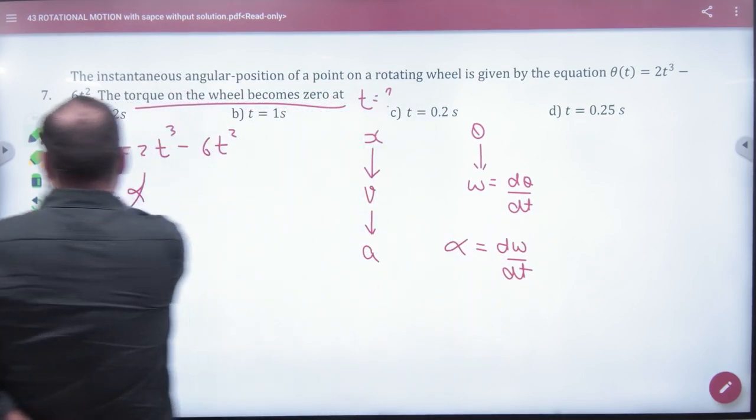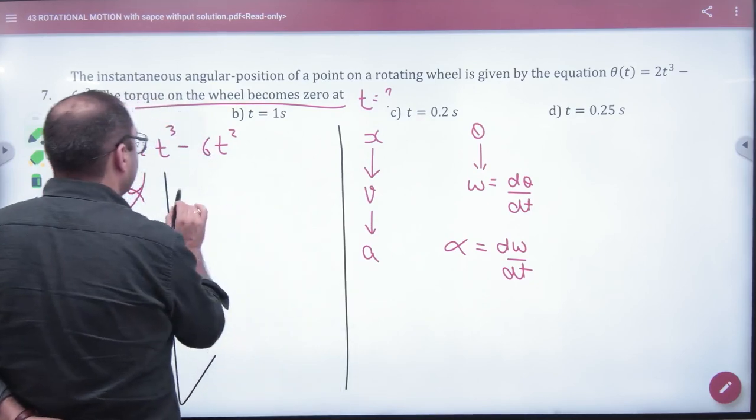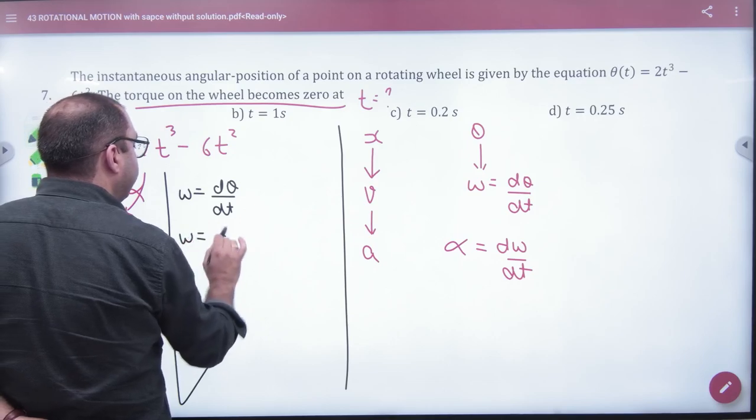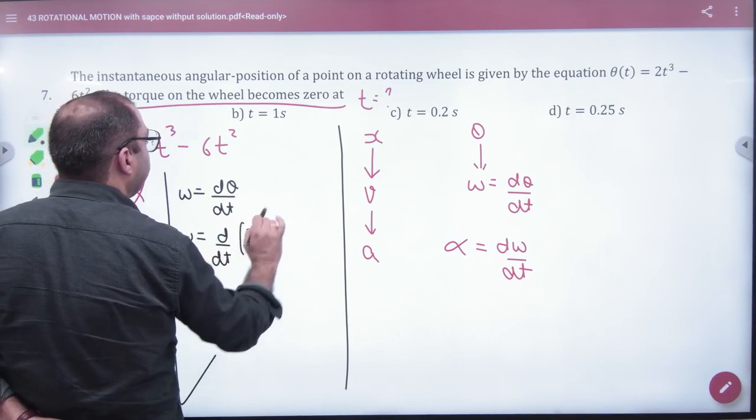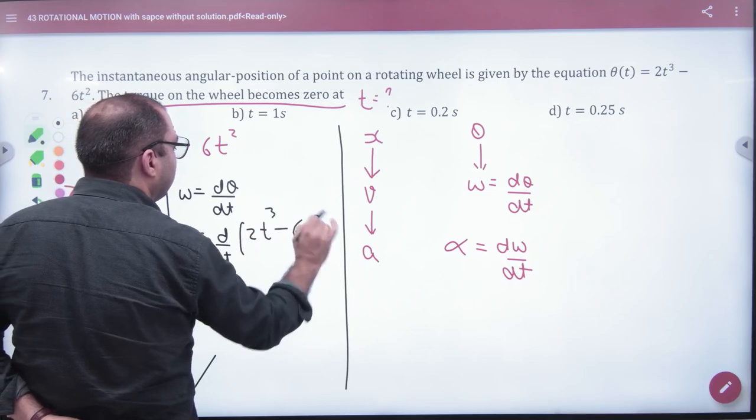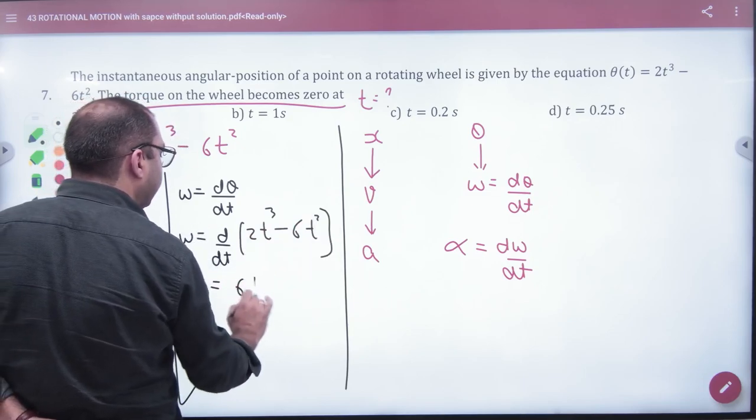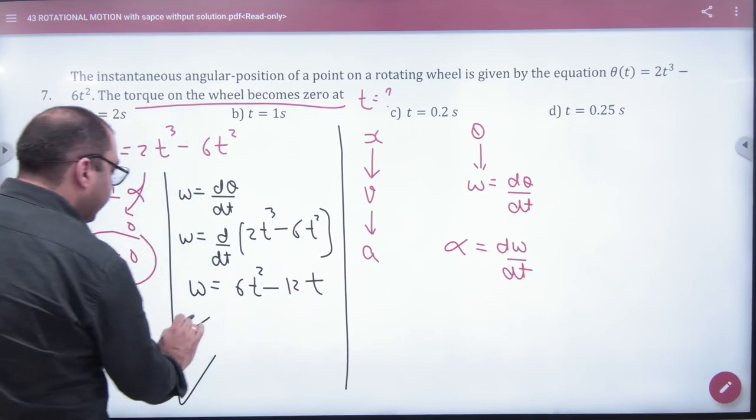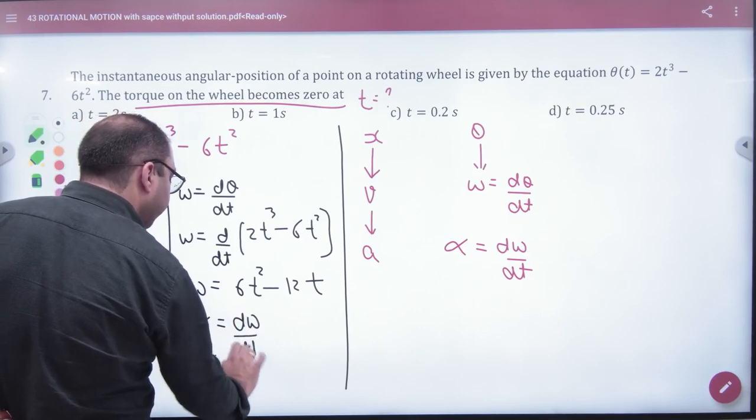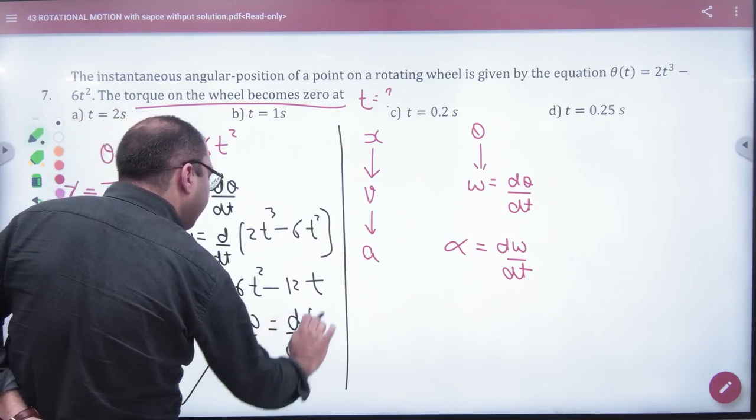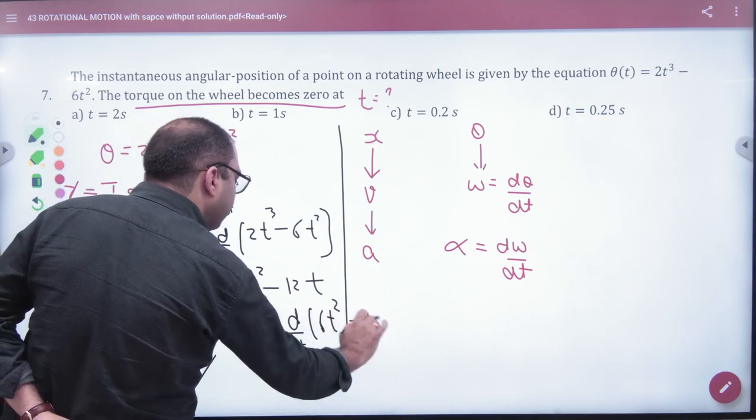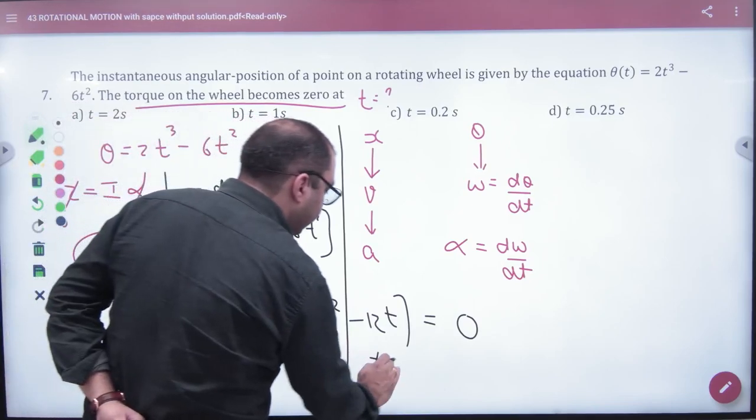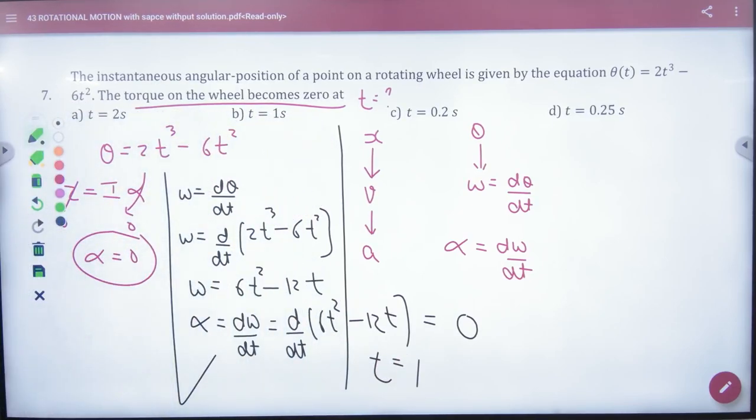First, let's find omega. Omega equals dθ/dt, which is d/dt of 2t³ - 6t². So the value is 6t² - 12t. Alpha will be dω/dt, so d/dt of omega 6t² - 12t. And alpha should be zero because torque is zero. One second is the answer.